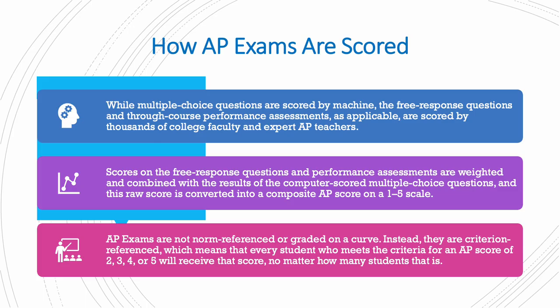How are AP exams scored? The MCQ questions are scored by machine, while the free response questions are scored by thousands of college faculty and expert AP teachers. Scores on the free response questions and performance assessments are weighted and combined with the results of the computer-scored MCQs, and this raw score is converted into a composite AP score on a 1 to 5 scale. AP exams are not norm-referenced or graded on a curve; instead they are criterion-referenced, which means that every student who meets the criteria for an AP score of 2, 3, 4, or 5 will receive that score no matter how many students that is.